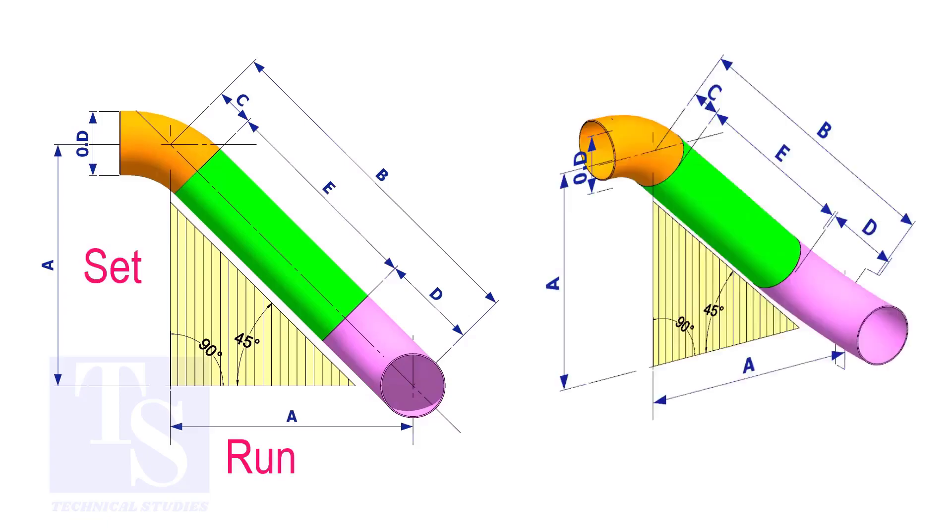In an offset, if the included angle is 45 degrees, the set and the run shall be the same. If the value of the set and the run are equal, the value of the travel is set or run multiplied by 1.414.